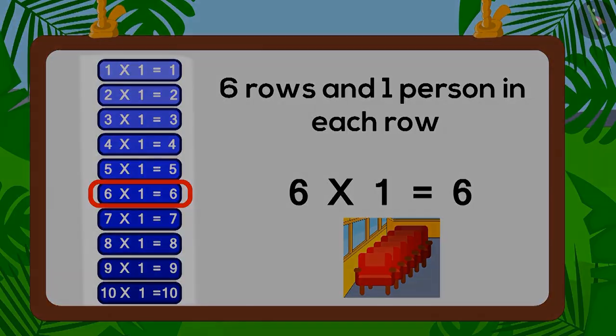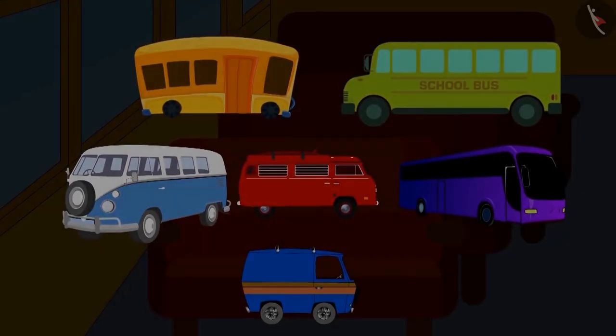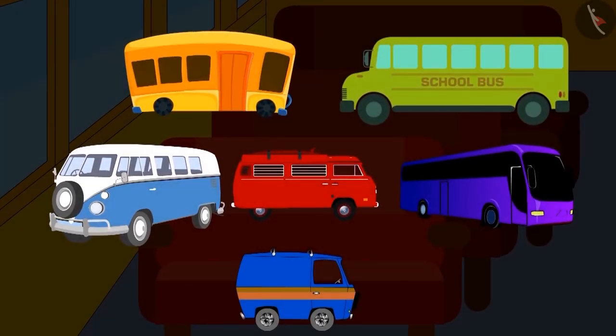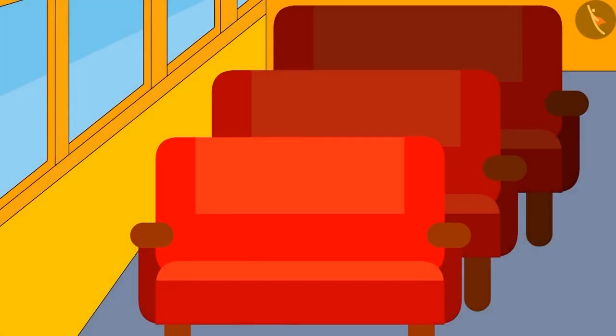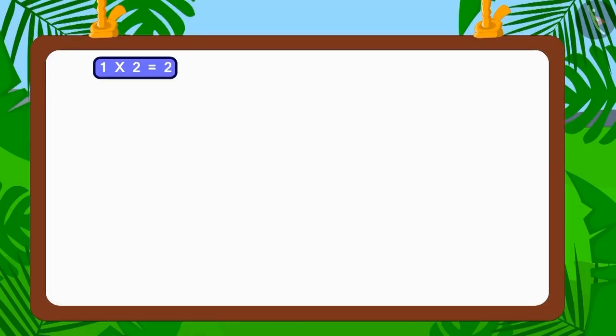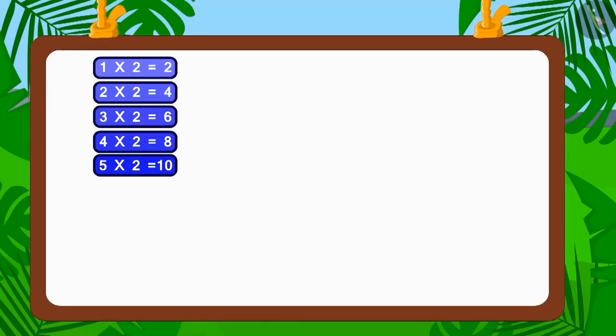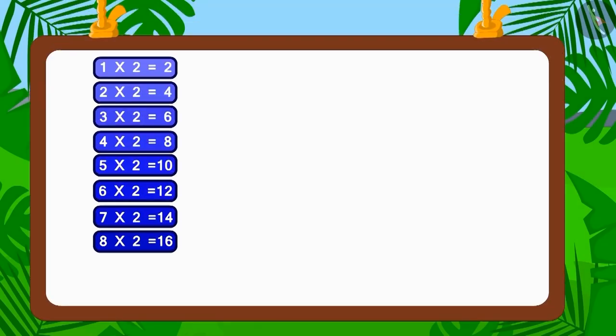So children, can you find out more such buses where six people can sit? But remember that the number of people in each row should be equal. Let's find all the factors of 6 and solve this puzzle.